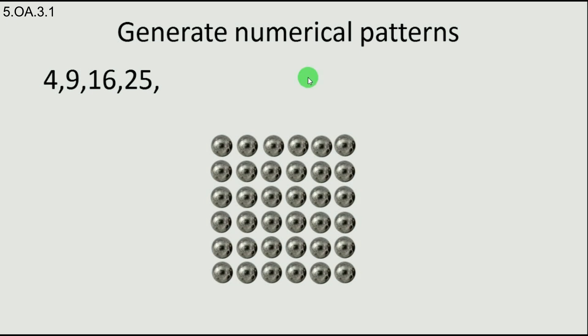Do you notice something? These numbers are all squares, of course. Four is two times two, nine is three times three, 16 is four times four, and 25 is five times five. This is a pattern with square numbers, of course.